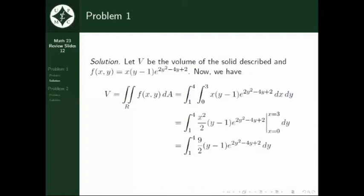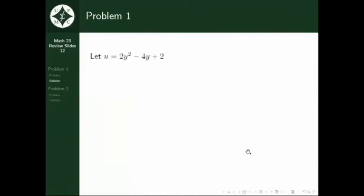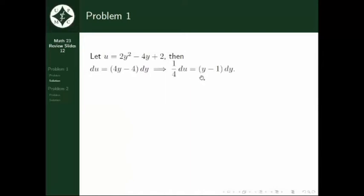Notice that the integral is pretty complicated, so we have to integrate with respect to y using u-substitution for the exponential function. To do that, we let u equal 2y squared minus 4y plus 2. Then we have du equal to (4y minus 4) dy, which is also equivalent to one-fourth du equal to (y minus 1) dy.